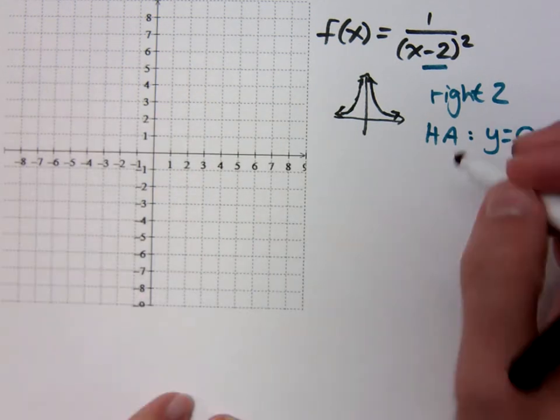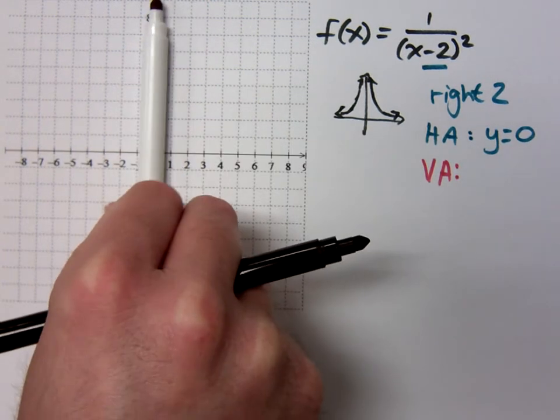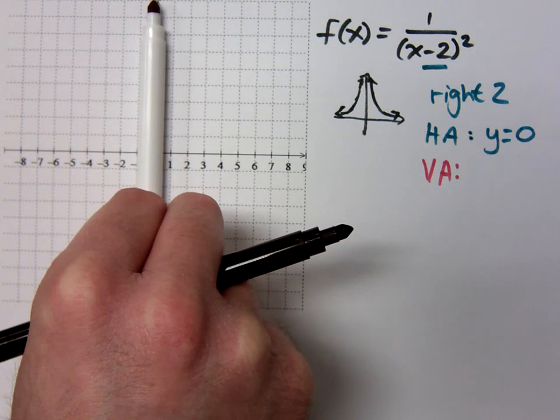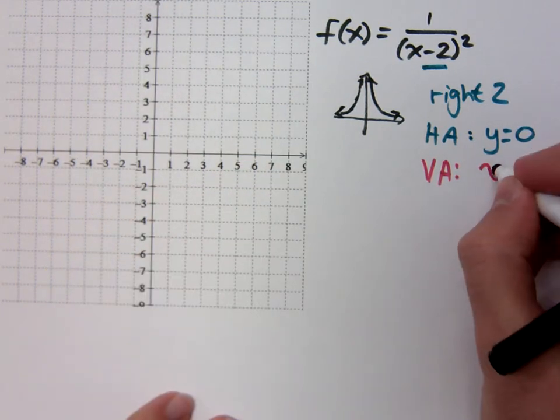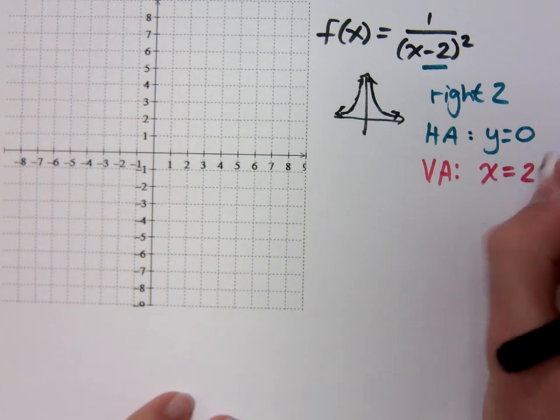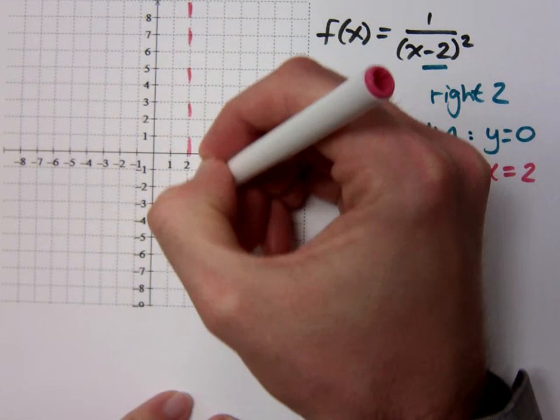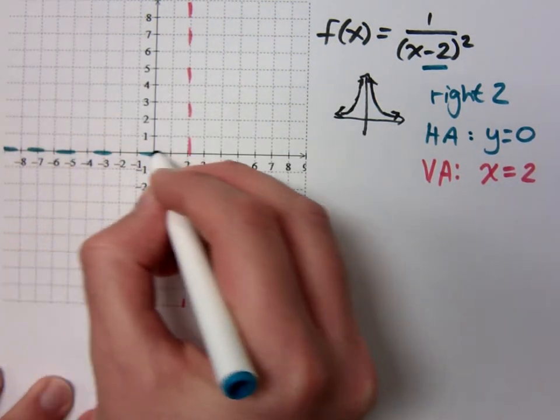x equals 2. What is your vertical asymptote? It was right here. What have I done with it? To the right 2, so what is the form for that? x equals 2. x equals 2. So there's my vertical and my horizontal asymptote.